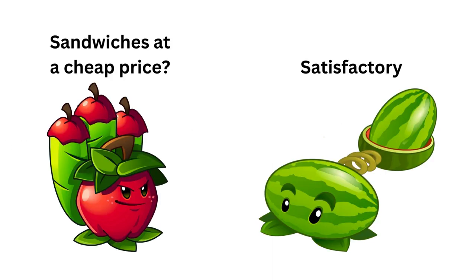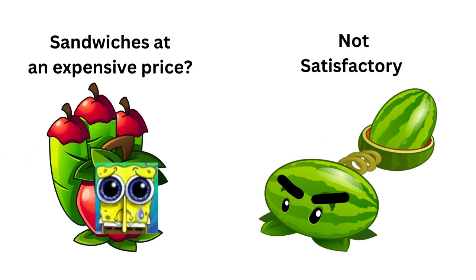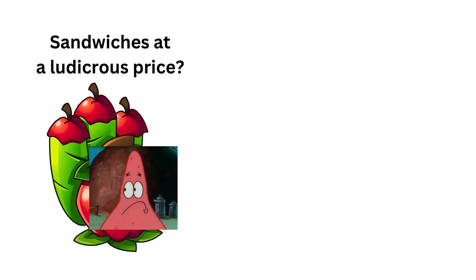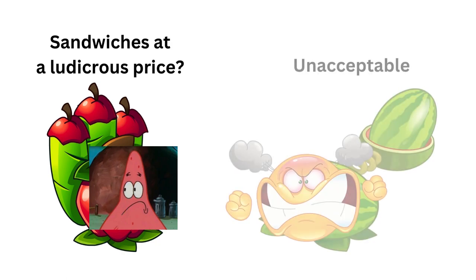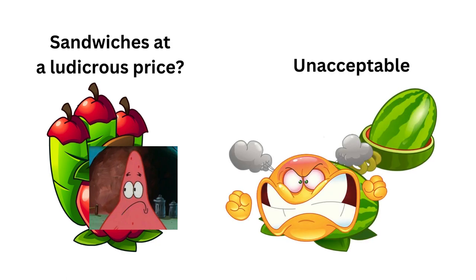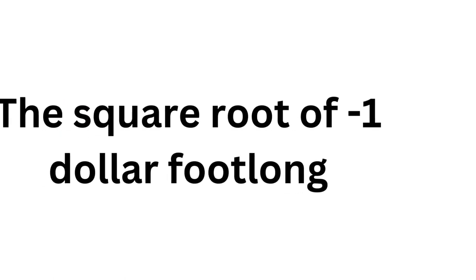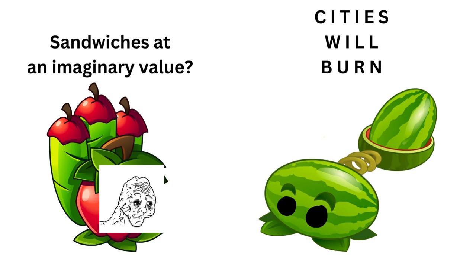Five dollar footlong sandwiches at a cheap price — satisfactory. Six dollar footlong sandwiches at an expensive price — not satisfactory. Six dollar footlong sandwiches at a ridiculous price — preposterous. The square root of negative one dollar footlong sandwiches at an imaginary value.